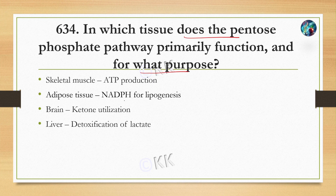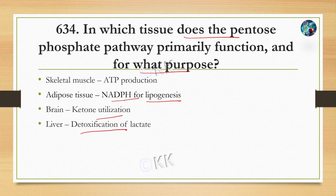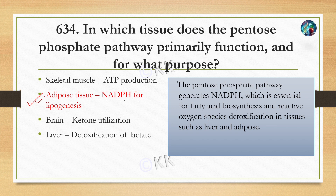In which tissue does the pentose phosphate pathway primarily function and for what purpose? Option A: skeletal muscle, ATP production. Option B: adipose tissue, NADPH for lipogenesis. Option C: brain, ketone utilization. Option D: liver, detoxification of lactate. The correct answer is option B: adipose tissue, NADPH for lipogenesis.